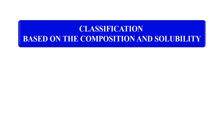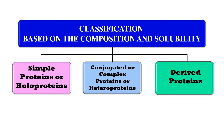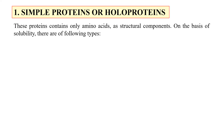The next category is classification based on composition and solubility. On this basis, proteins may be simple proteins, conjugated or complex proteins, and derived proteins. Simple proteins, as the name indicates, contain only amino acids — their structure consists of just amino acids, and on decomposition with acid, they only liberate amino acids.